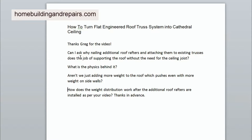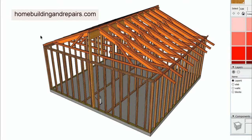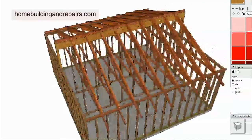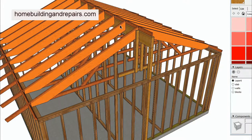The question is: why does nailing additional roof rafters and attaching them to existing trusses support the roof without the need for ceiling joists? In a previous video I don't think I provided enough information about this. Here's the thing — you can't just nail a rafter to the truss, that's not going to work. You need a ridge beam, some type of support system that will prevent the weight of the roof from pushing down and then pushing the walls out.